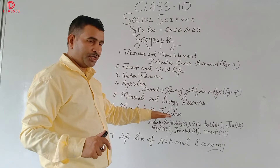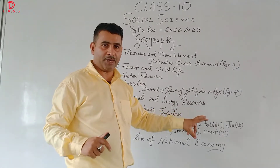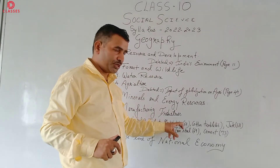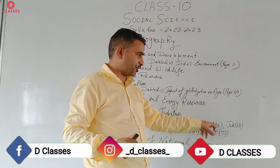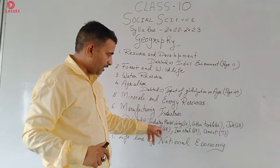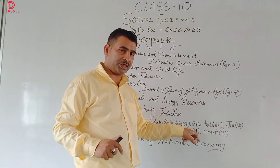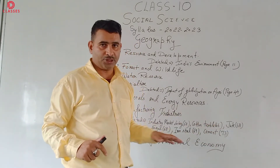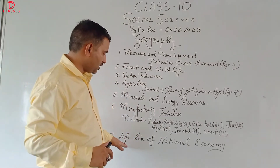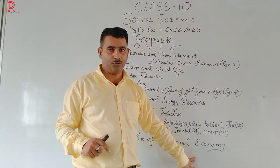Manufacturing Industry: some points have been excluded. The deleted contents are: industry on page 64, textile on page 66, jewelry industry on page 68, sugar industry on page 68, iron industry on page 69, and cement on page 73. These contents have been deleted. The last chapter, Lifelines of National Economy, is included.